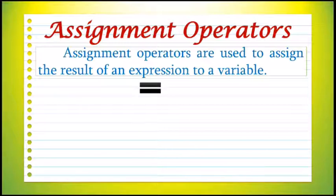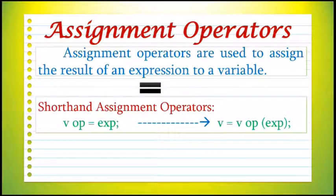In addition, C has a set of shorthand assignment operators of the form V OP= EXP, where V is a variable, OP is a C arithmetic operator, and EXP is an expression. The operator OP= is known as a shorthand assignment operator. V OP= EXP is equivalent to V = V OP EXP.